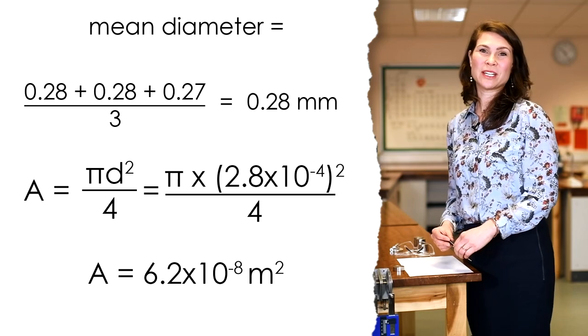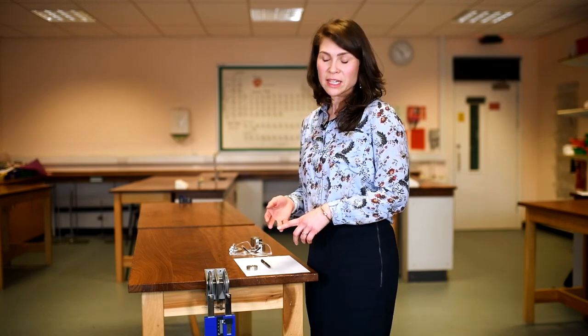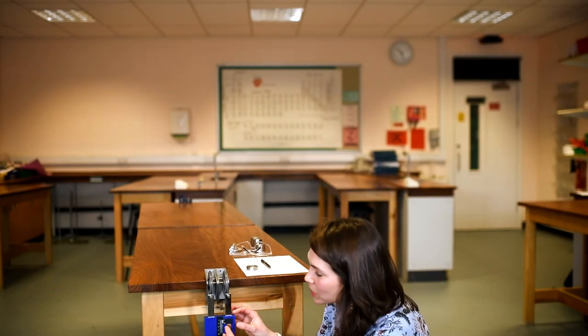Cross-sectional area equals pi d squared over 4. The next measurement we require is the original length of the wire, and for this we used a series of metre rules, and found the original length to be 2.46 metres. We have, of course, already applied a small tension to the wire to ensure that the wire is taut when we took the readings of diameter and original length, and this was supplied by the hangers already attached to the vernier scale. However, before we add the additional 100 grams, we have to make sure that our vernier scale is perfectly zeroed.